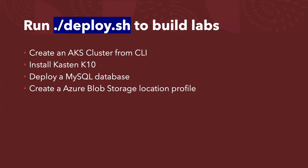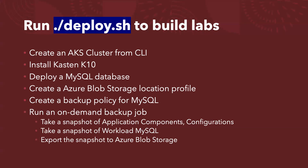Then we're going to create an Azure Blob Storage location profile, and we will also create a backup policy for MySQL database. After the policy is created, we will run an on-demand backup job. Basically, we are going to take a snapshot of the application components and all the Kubernetes configurations, and then take a snapshot of the workload — in this case, MySQL database. After the snapshot creation is done, we will export the snapshot to Azure Blob Storage, which is more safe — you're not putting all your eggs in the same basket.